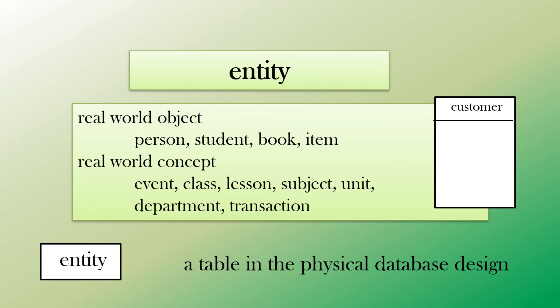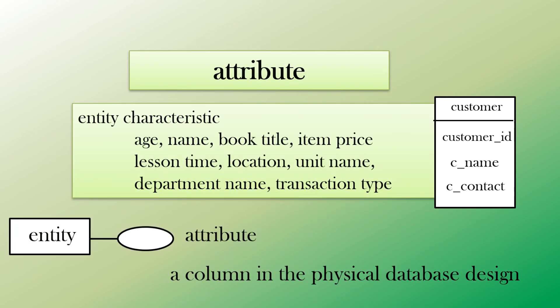We can think of a person, a student, a book, an item, a customer. We can have other concepts such as events, lessons, departments, or a transaction. So that's an entity that will be a table in our physical design. The characteristics within the table would be like the columns in the database table. We call these attributes. The attributes might be someone's age or name, a book title, a price, a location, or transaction type. These are all attributes.